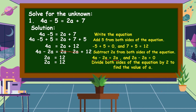We divide both sides of the equation by 2 to find the value of A. 2A divided by 2 gives us A. 12 divided by 2 is equal to 6. Therefore, the value of the unknown A is equal to 6. This is our final answer.